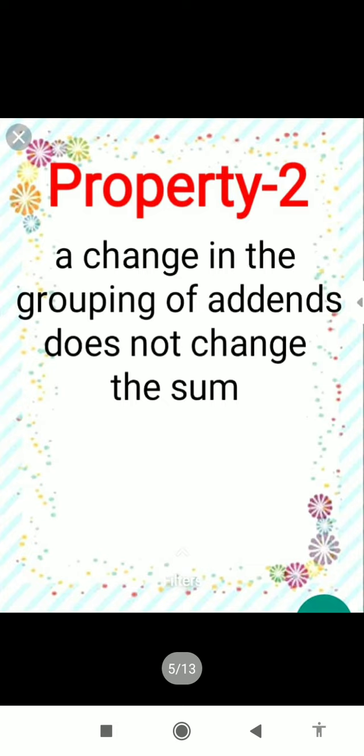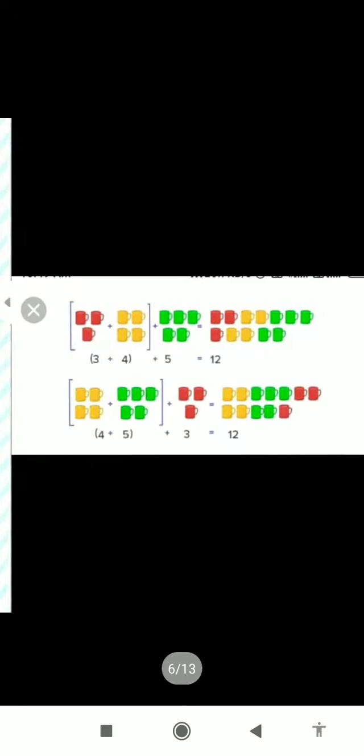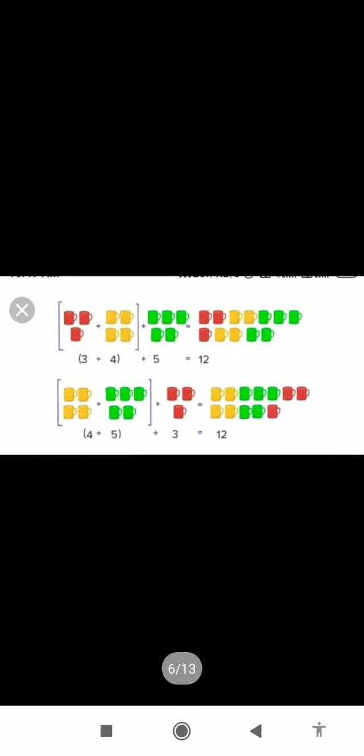Property number two: a change in the grouping of addends does not change the sum. It means when you change grouping of the addends, for example in the first column...